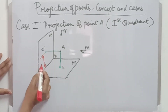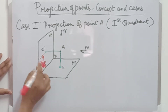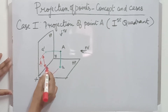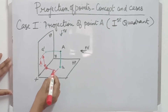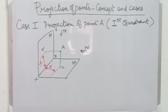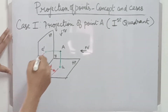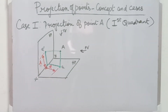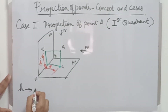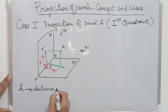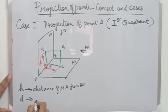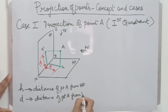Let the distance of point A from the horizontal plane be H, and the distance of point A from the vertical plane be D. The distance of point A from HP is small h and the distance of point A from VP is small d.